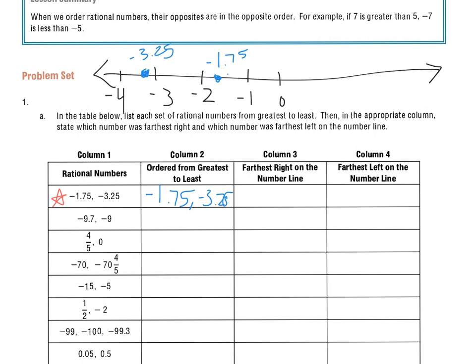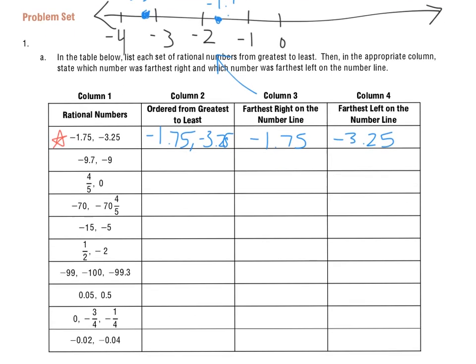So for column 3, farthest right on the number line, looking right up above, I see that it's negative 1 and 75 hundredths. And farthest to the left is negative 3 and 25 hundredths. So that's more or less what you're going to do for this whole chart.